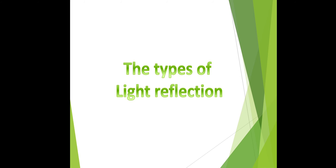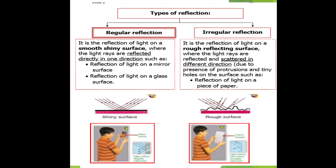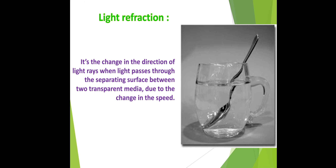There are two types of light reflection: regular and irregular. Regular reflection occurs when light falls on a smooth, shiny surface and the reflected rays go directly in one direction. Irregular reflection occurs when light falls on a rough surface and the rays are scattered in different directions.